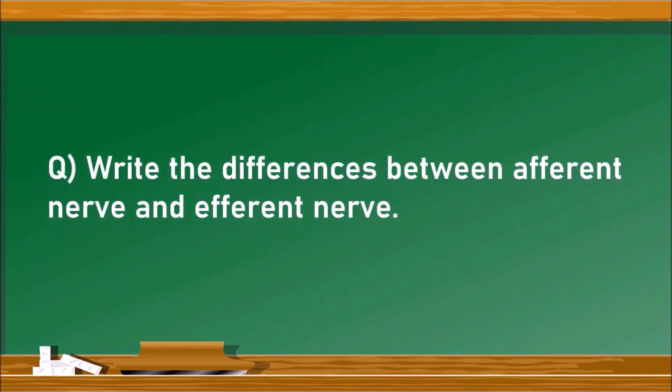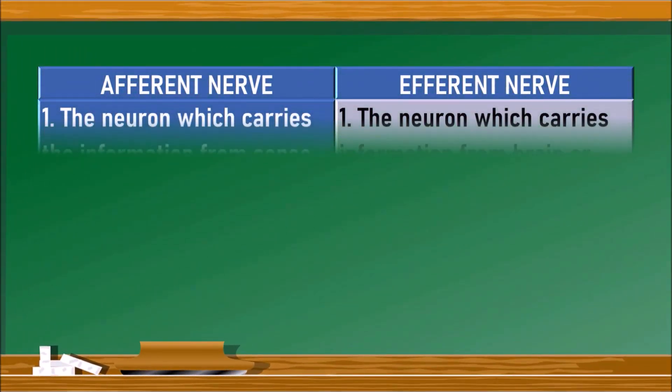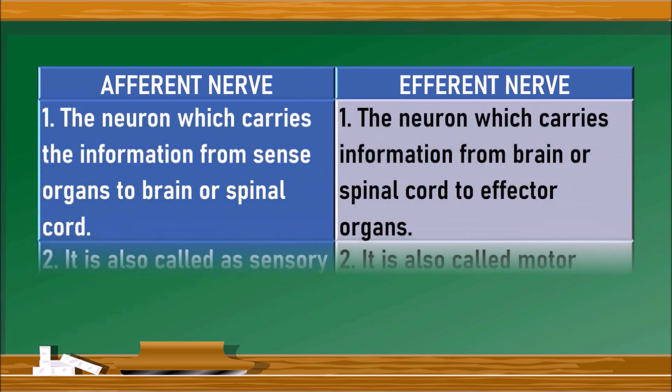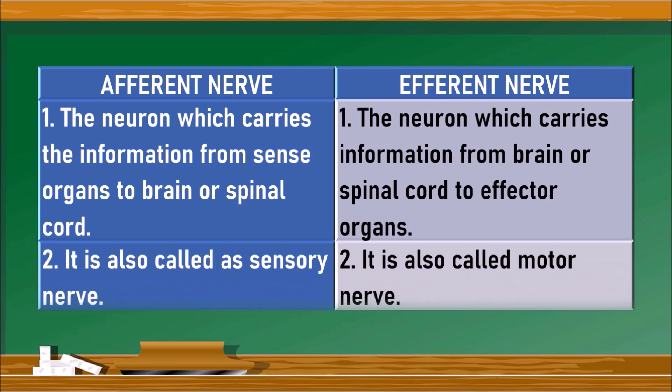Write the differences between afferent nerve and efferent nerve. For this also we need to draw a table with afferent nerve and efferent nerve on either side. The neuron which carries information from sense organs to the brain or spinal cord is known as afferent nerve, whereas the neuron which carries information from brain or spinal cord to the effector organ is known as efferent nerve. Afferent nerve is also called as sensory nerve, whereas efferent nerve is also called as motor nerve.